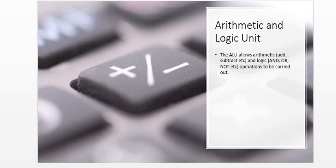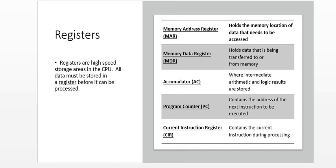Whatever data processing is being carried out in a computer system, the data needs to be stored somewhere where it can be accessed quickly for additional operations to be performed. For this to be possible, we have what we call registers, which are high-speed storage areas where data is stored before and during processing. We have various types of registers: the Memory Address Register, Memory Data Register, Accumulator, Program Counter, and Current Instruction Register.